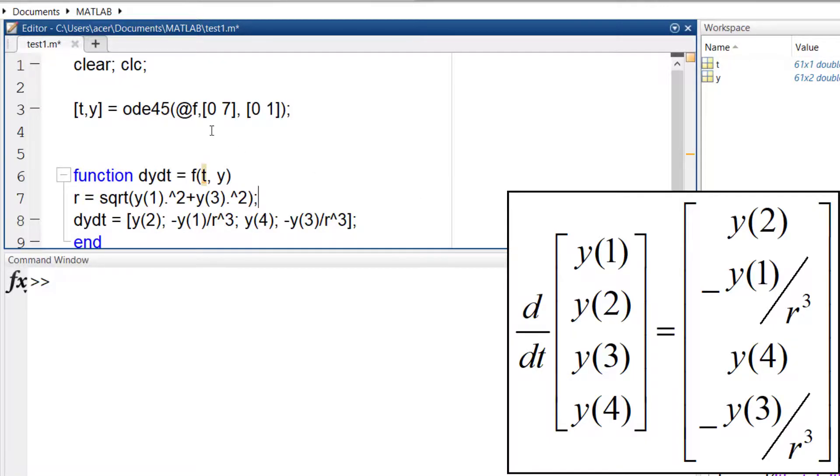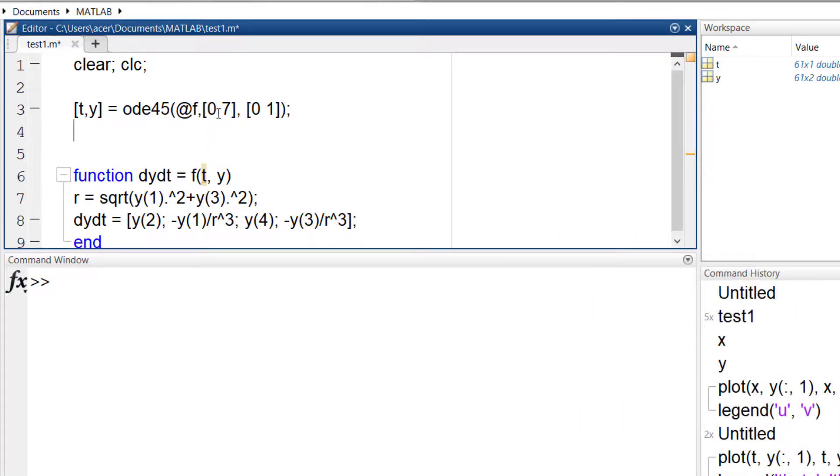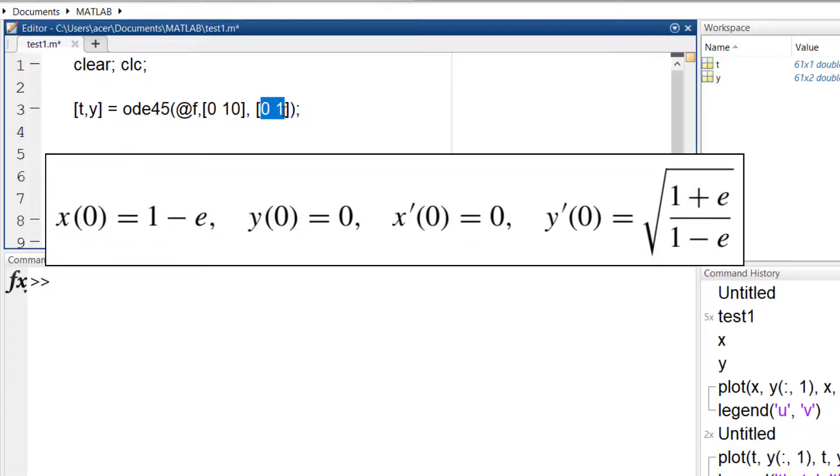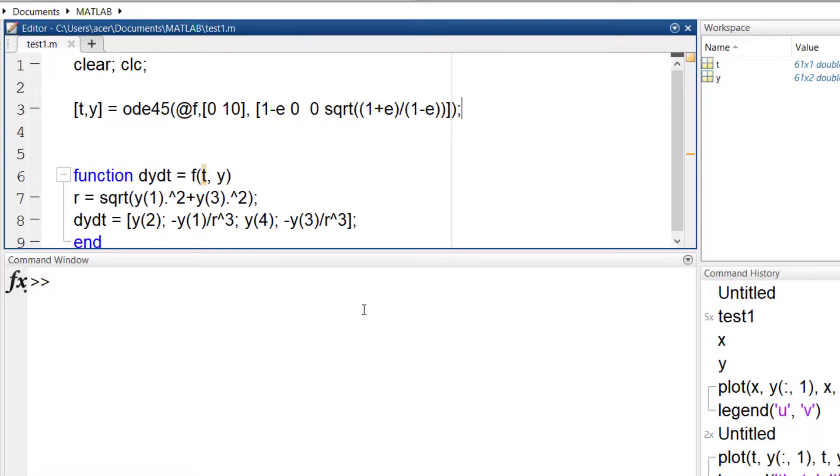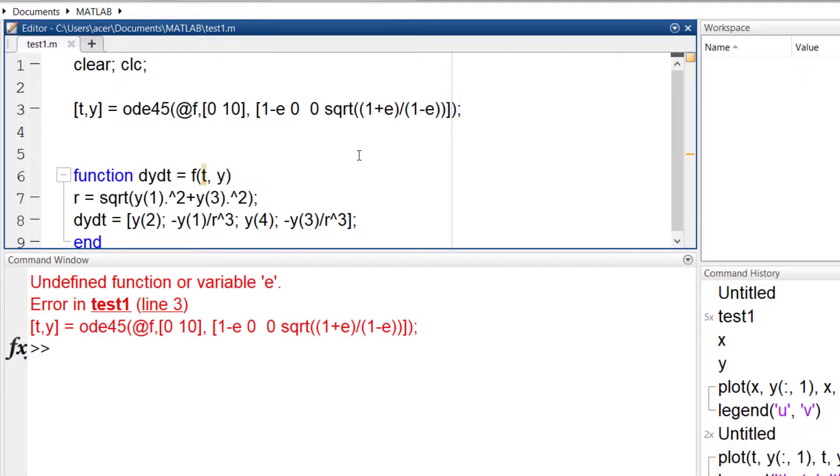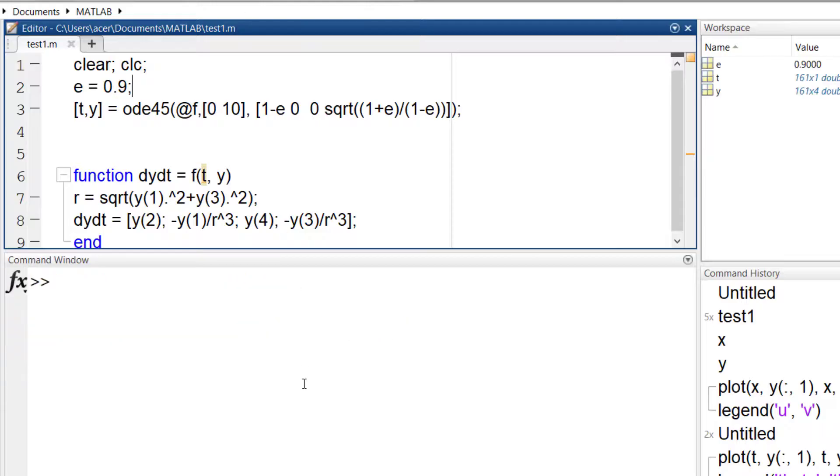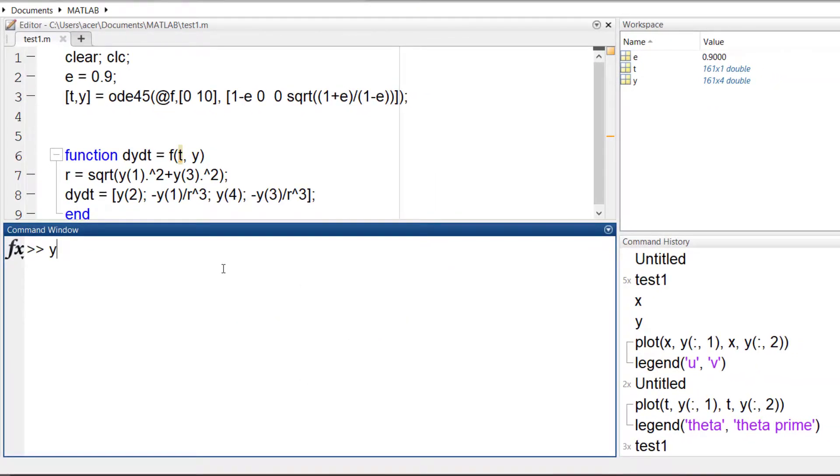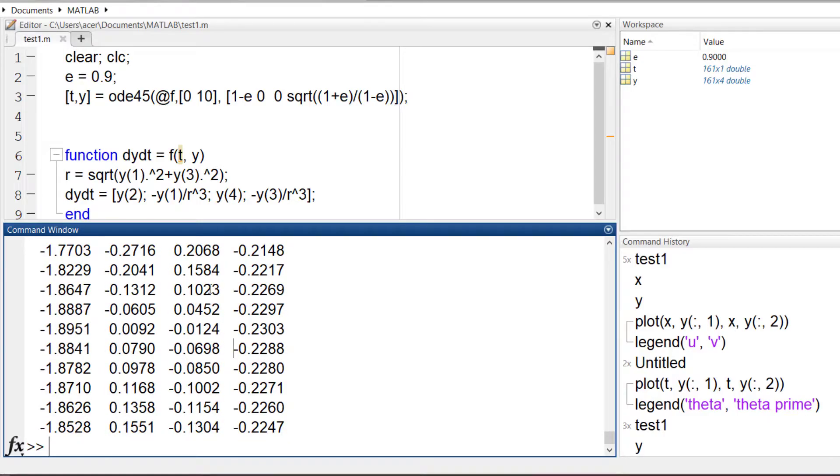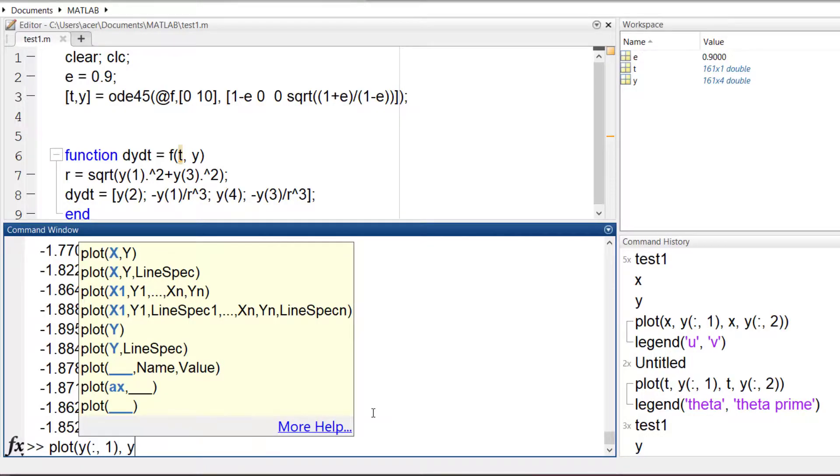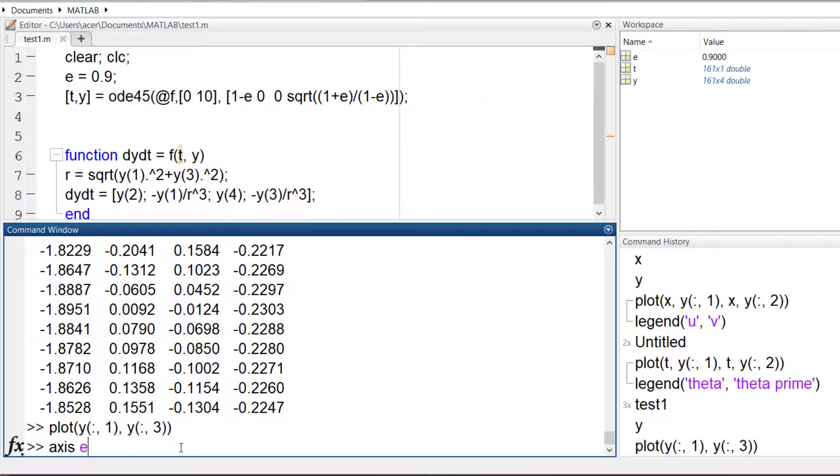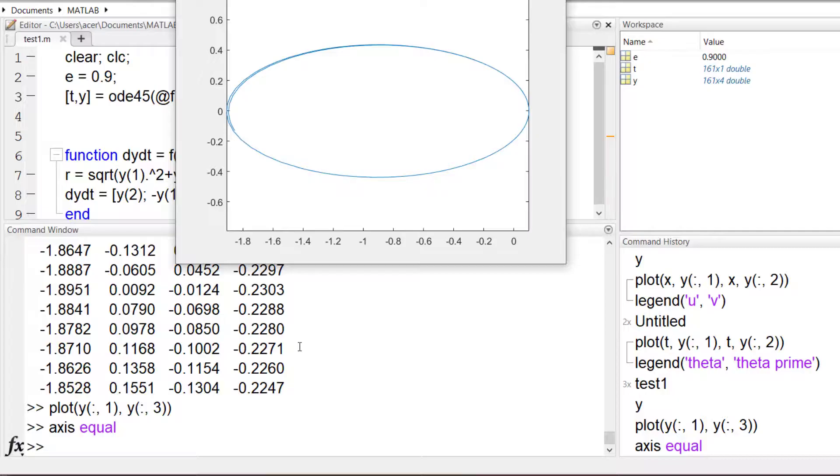Now that I have defined my function, I can run ODE45 for 10 seconds. And I also add initial conditions. You can see the results here. I also plot x and y coordinates of the moving body. You see it revolves in an ellipse.